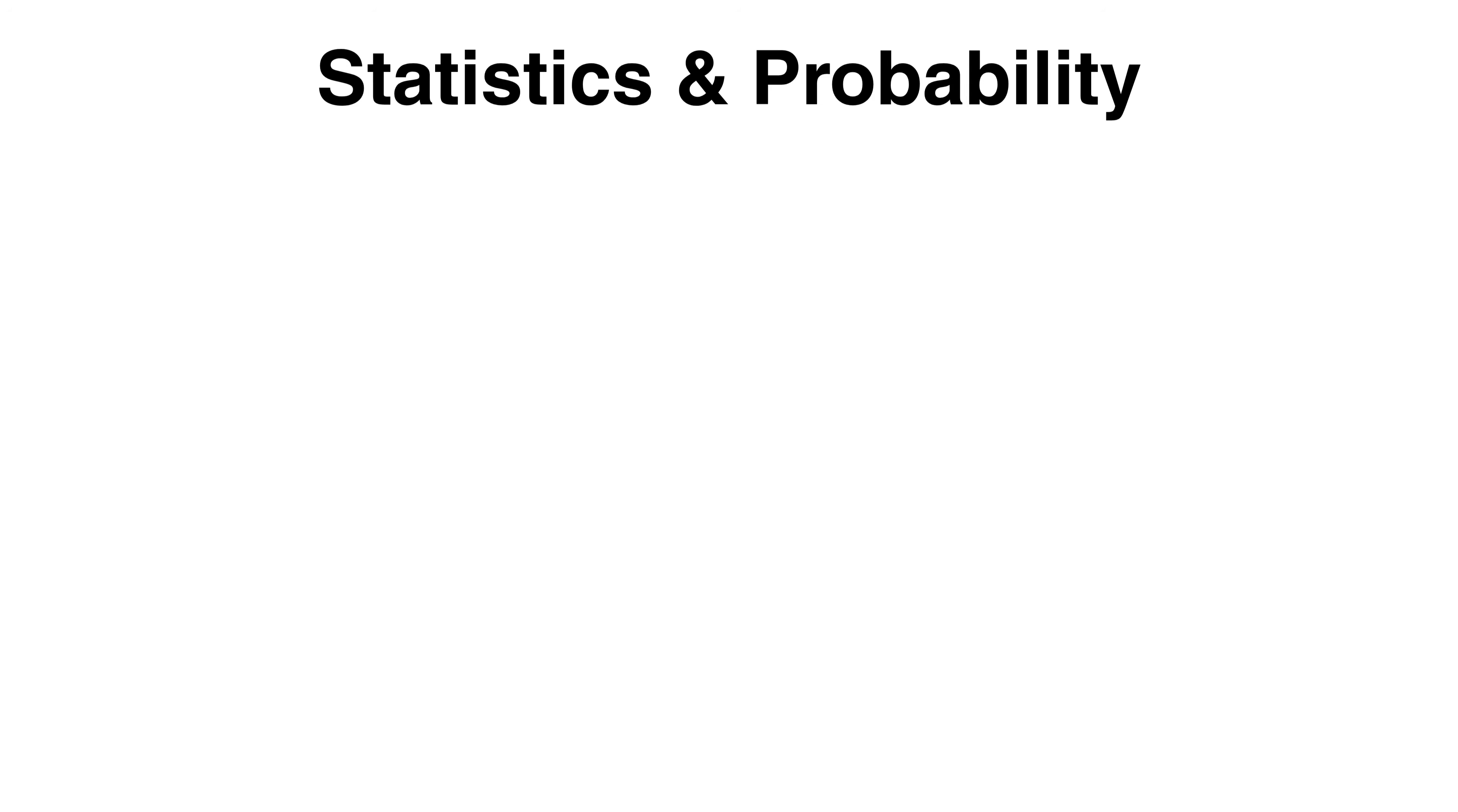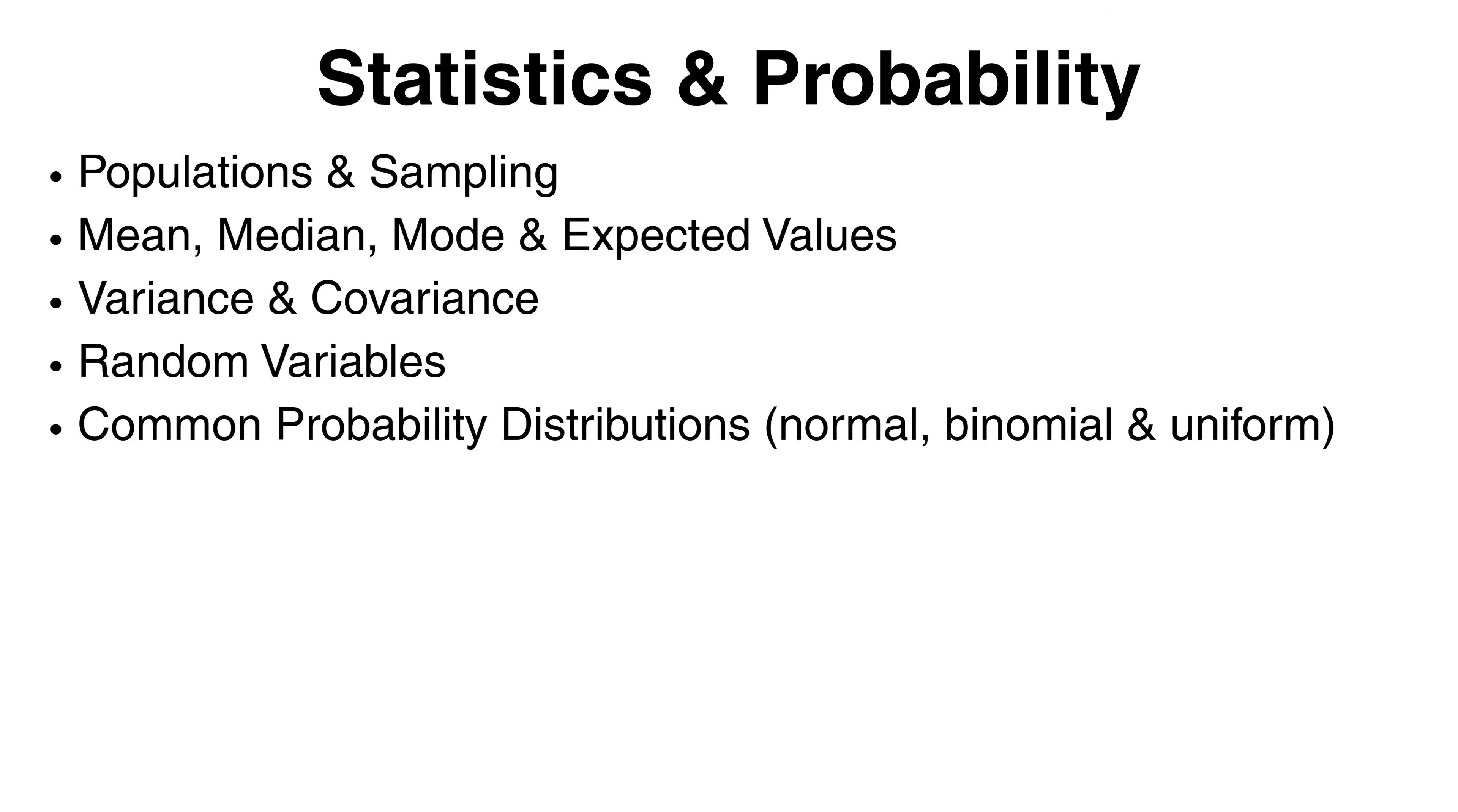The key concepts to focus on here include things like populations and sampling that lets you work with subsets of data, the mean, median, mode and expected values, variance which tells you how spread out your data is, and covariance which shows you how two variables relate. Random variables, common probability distributions like the normal, binomial and uniform. The normal distribution in particular shows up all over the place in data science and machine learning, so it's worth getting really familiar with.